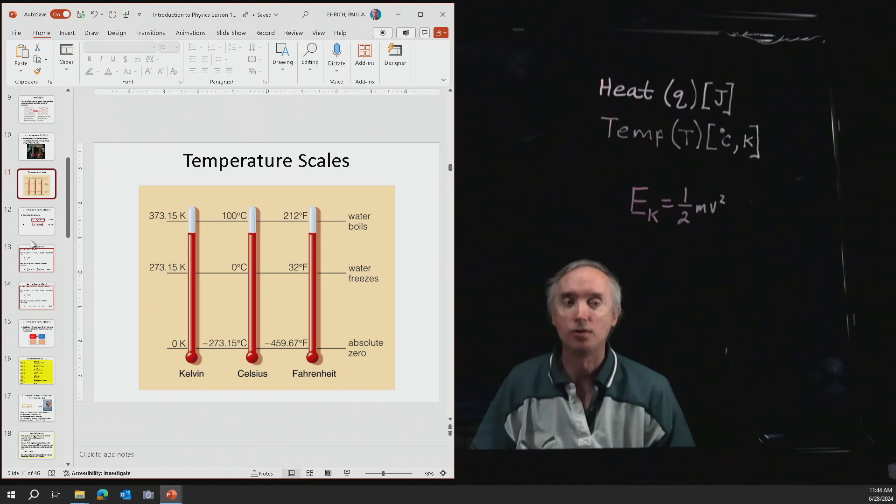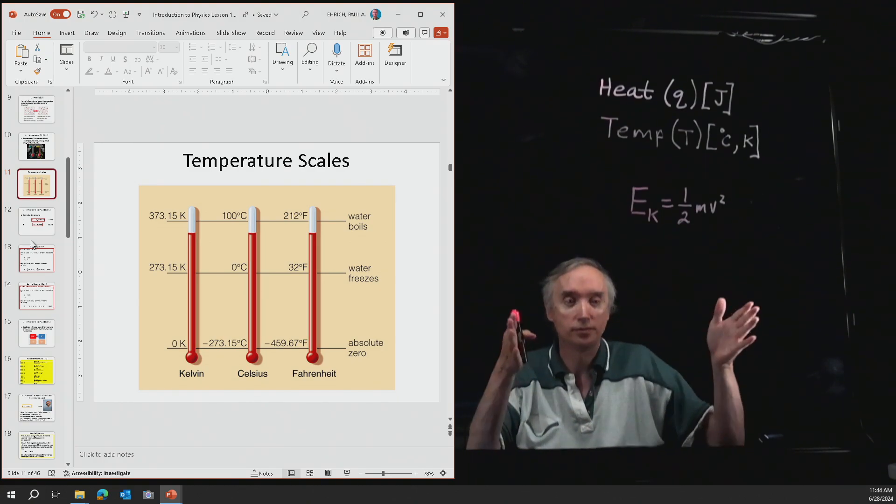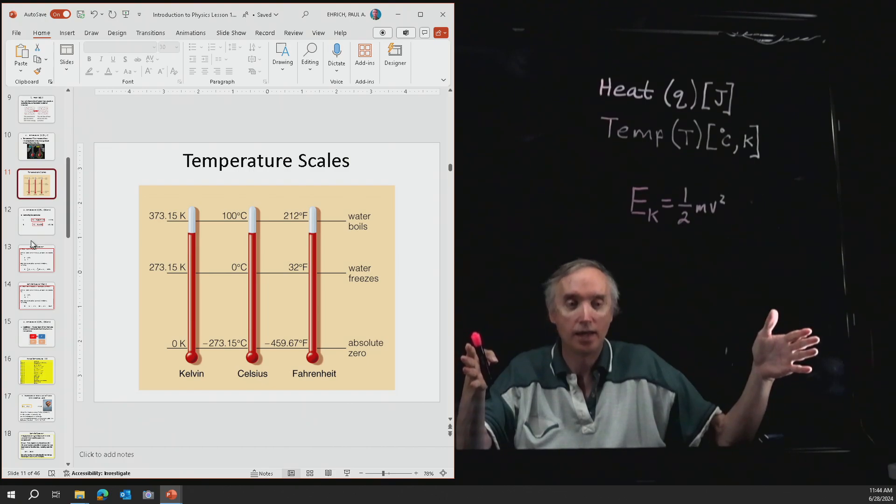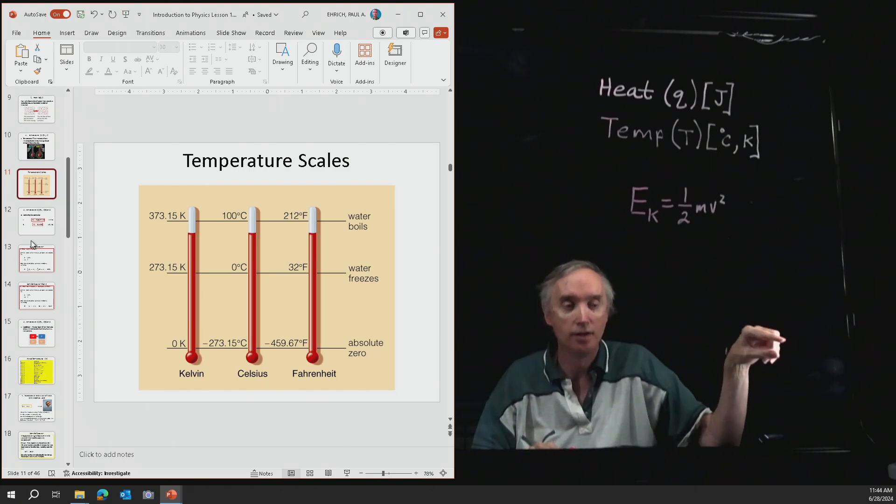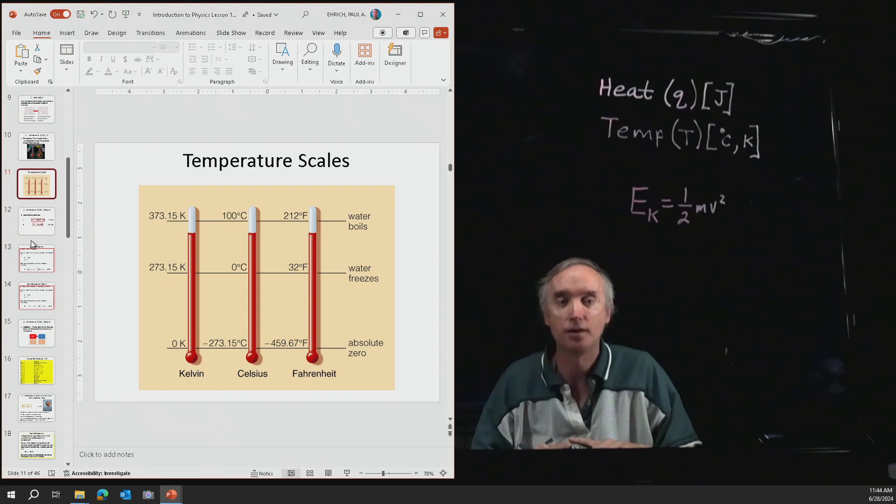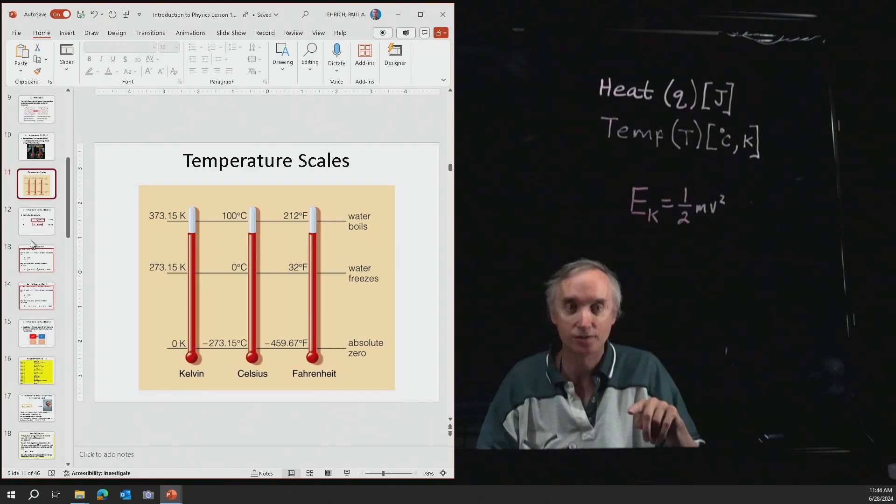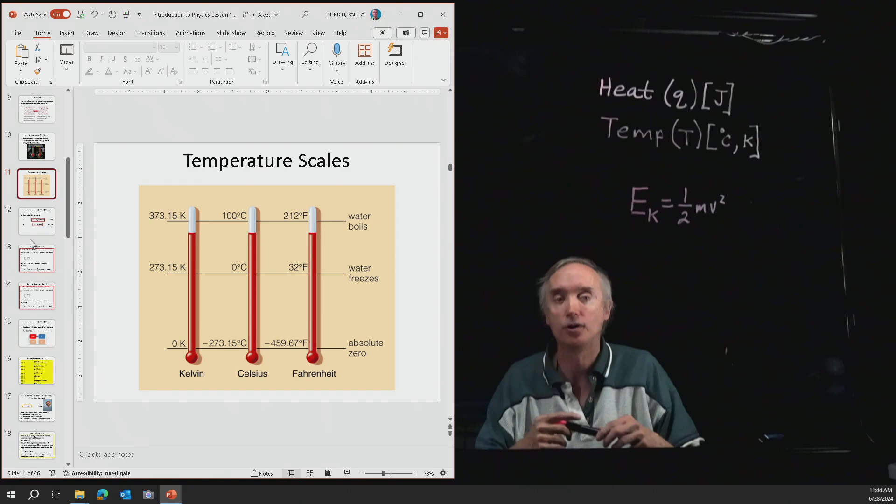If you recall, a meter was about this big, and it had 100 increments on it, and we called those the centimeters. So in the same way that a meter stick has 100 centimeters, a thermometer has 100 centigrade. So going from 0 degrees Celsius to 100 degrees Celsius, you could also say you're going from 0 degrees centigrade to 100 degrees centigrade.